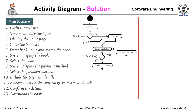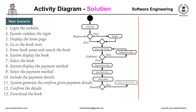The next process is searching the book: enter book details and search the book. Another decision condition similar to the above — if the book is not found, display a 'not found' message and show the iteration process. If found, display the payment option.